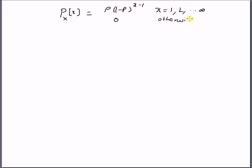That is, when x is not equal to any of the natural numbers, the probability mass function is 0. Here x denotes the possible values of the random variable capital X.